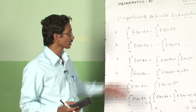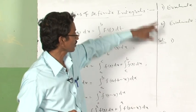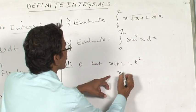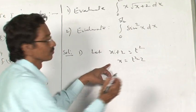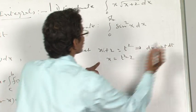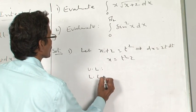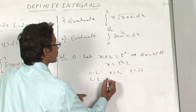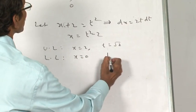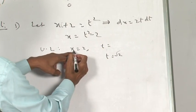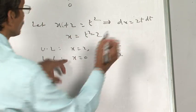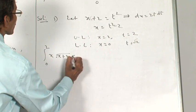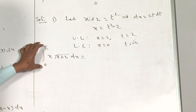I will solve the first problem using the substitution method. Let x + 2 = t², so x = t² − 2, which implies dx = 2t dt. Applying limits: when x = 2, t = √4 = 2, and when x = 0, t = √2. The integral from 0 to 2 of x·√(x + 2) dx becomes, after variable substitution, the integral from √2 to 2 of (t² − 2) · t · 2t dt.